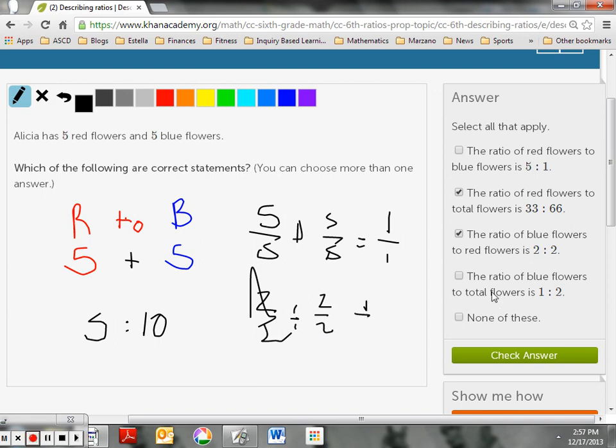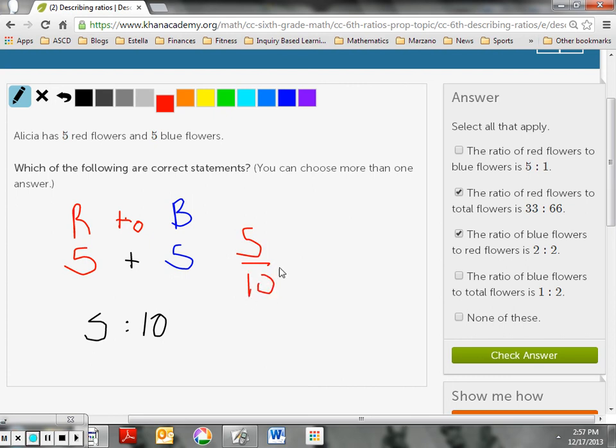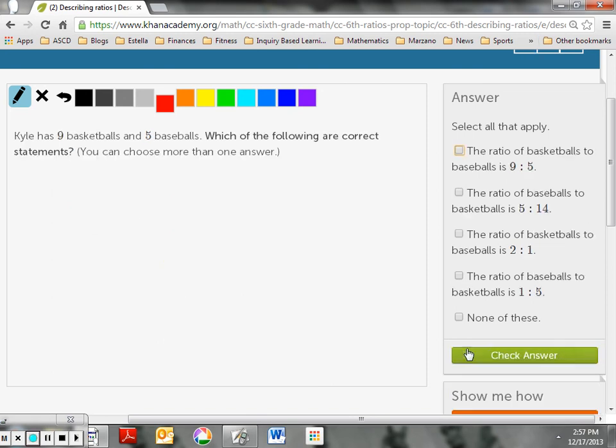The ratio of blue flowers to total flowers is 1 to 2. So if I have 5 blue flowers to total flowers, the total flowers again was 10. Is that the same as 1 to 2? Divide both by 5. It definitely is. So that is 1 to 2. So that would also work. So let's click here. Check answer. All right.